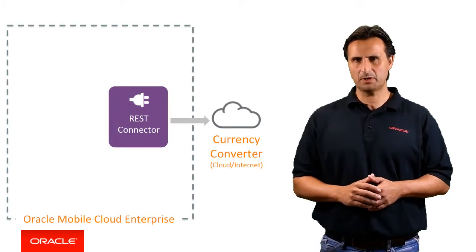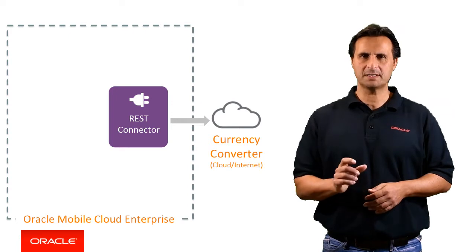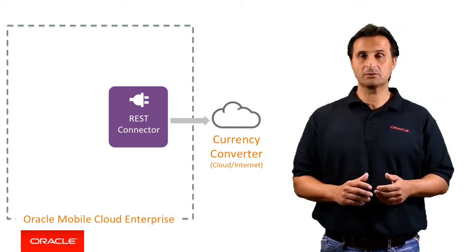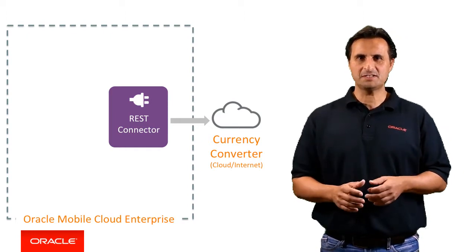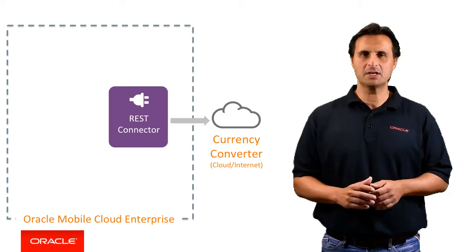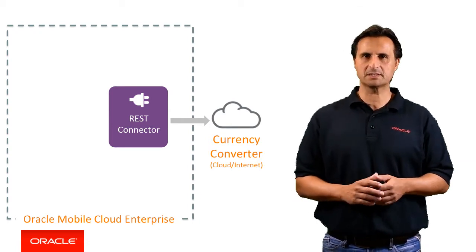Now that I introduced the currency converter as an example, let's continue with it. Currency converters like fixer.io, which is a free service published by the European Central Bank, exist as REST services on the internet, so you don't necessarily have to build them from ground up. Oracle Intelligent Bots is part of Oracle Mobile Cloud Enterprise, and Oracle Mobile Cloud Enterprise has a REST connector functionality that makes connecting to those services declarative and easy. So with the connectivity being sorted, the next step is to think about a reasonable architecture for building custom components.